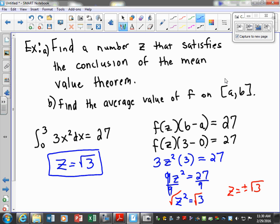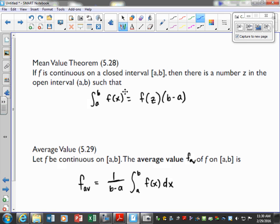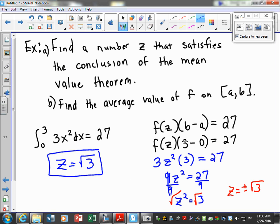Okay, so one more time to recap that: we take our definite integral which is given to us, in this case it equaled 27, and set it equal to our f(z) times (b - a). Plugged in our b, plugged in our a, evaluated that to get three. Evaluated f at z, meaning go to your original function, everywhere there's an x plug in a z. Do the algebra, only count the answer that applies for this particular interval, and that's our solution.